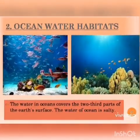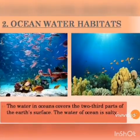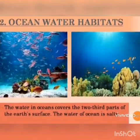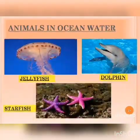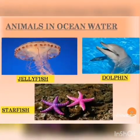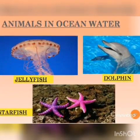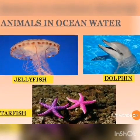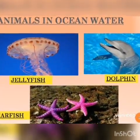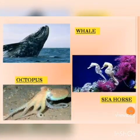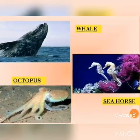Second is ocean water habitat. The water in the ocean covers two-thirds of the earth's surface and the water of the ocean is very salty. Jellyfish, dolphins, starfish, whale, octopus and seahorse are some of the examples of animals that live in ocean water.